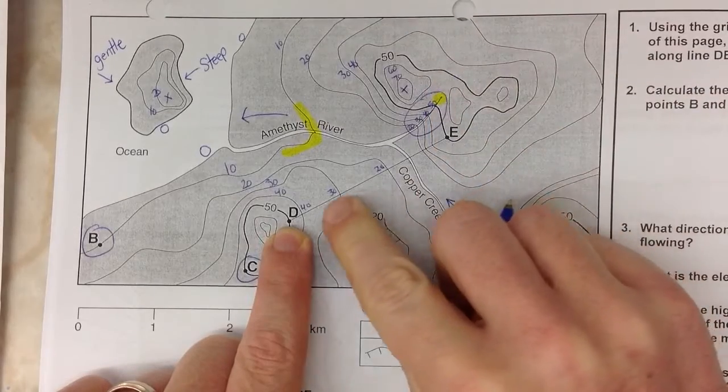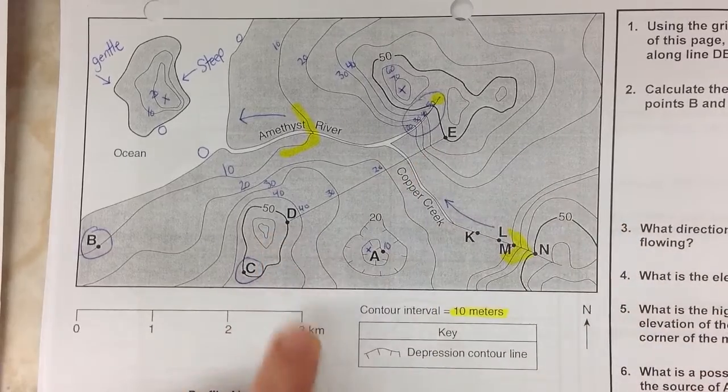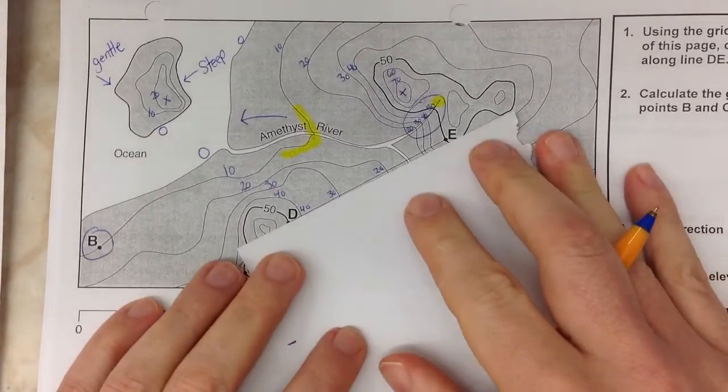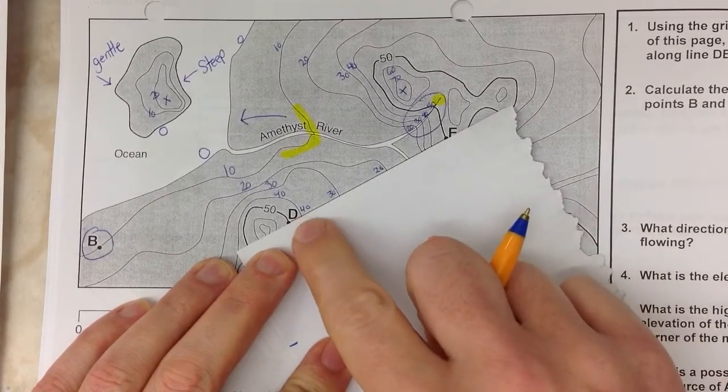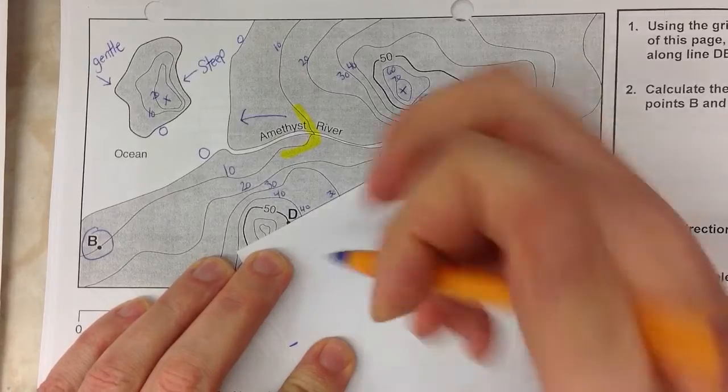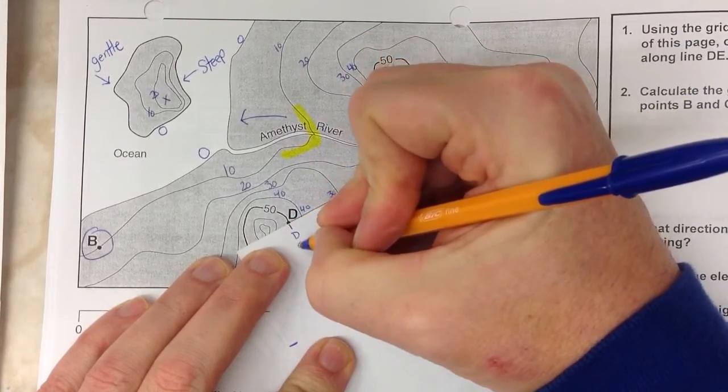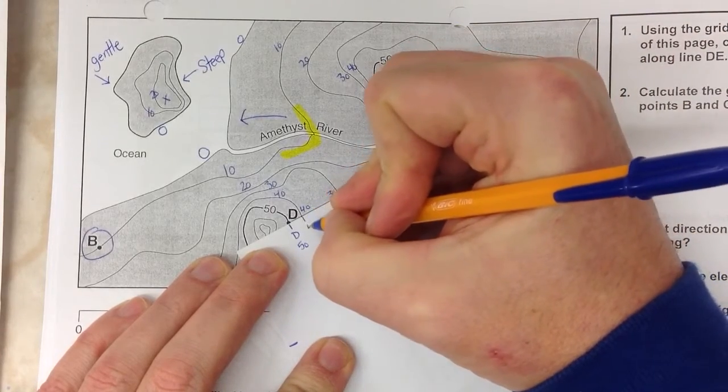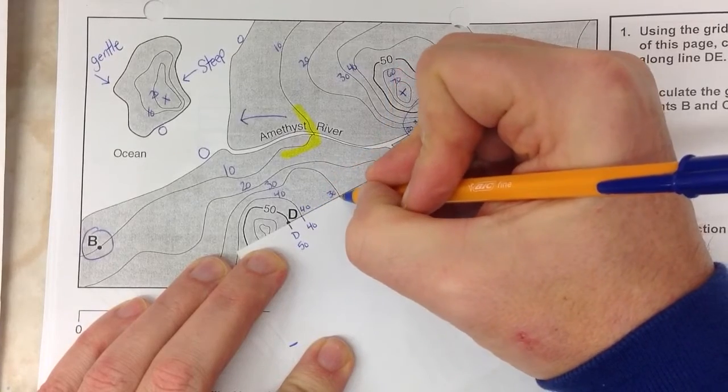So what I like to do is I actually like to physically label my lines. And the reason why I like to label my lines is I'm going to put my piece of paper right along my baseline of D and E. And now what I'm going to do is I'm just going to take my elevations and transfer them to my paper. Exact spacing. So there's D and D is at 50. Here's 40. So I mark off where my contour line touches my paper with that elevation.